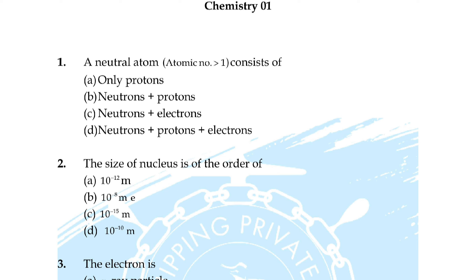Question number 27: the kinetic theory of gases proves — option A: only Boyle's law, B: only Charles's law, C: only Avogadro's law, D: all of these. Correct answer is option D: all of these.